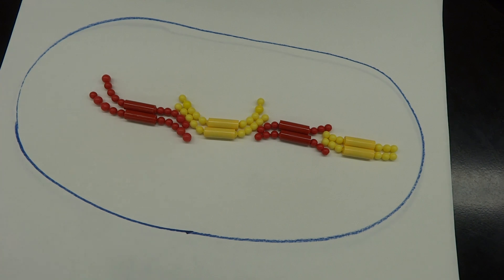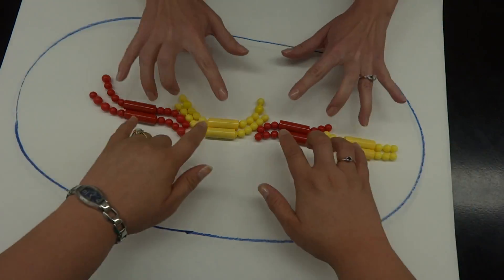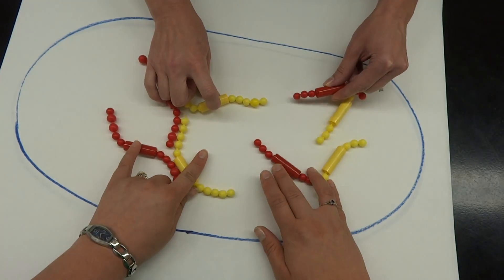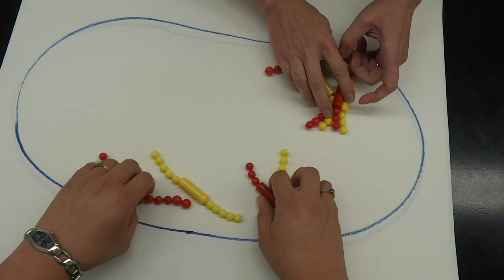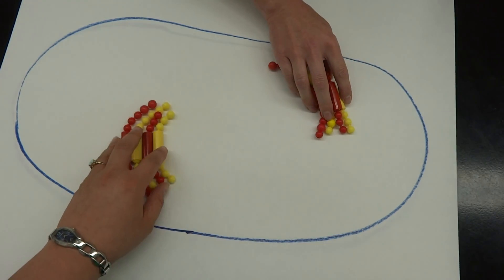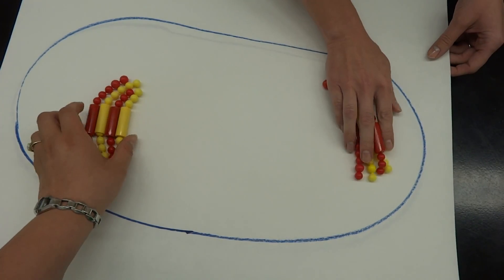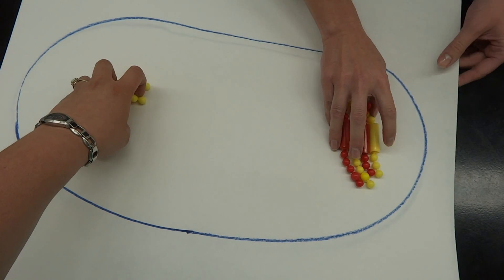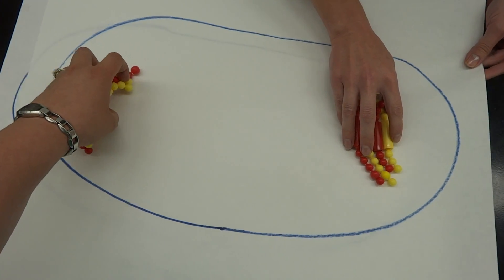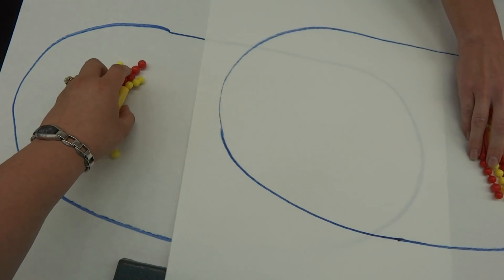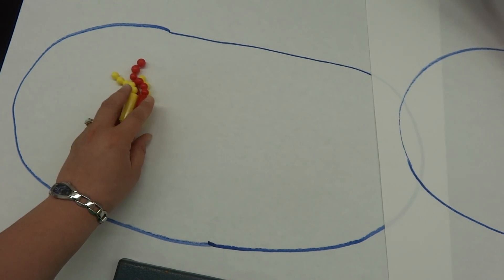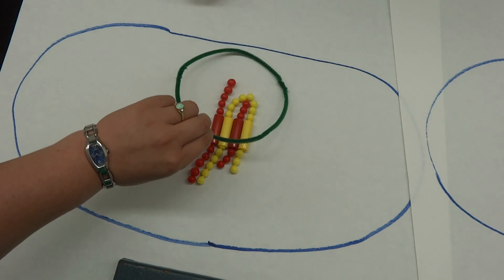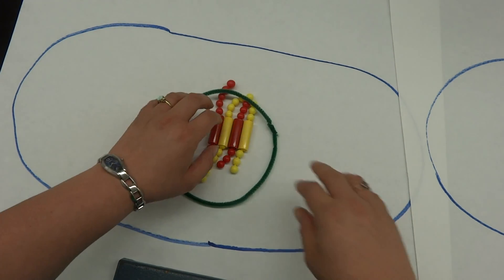And as we move into anaphase, we are going to see the chromosomes get yanked apart from one another. One of each will go to each pole of the cell. And then we will see telophase as our nuclear envelopes start to reform. And we are pulling apart the cells during cytokinesis. And in our telophase, we'll see our nuclear envelope reform.